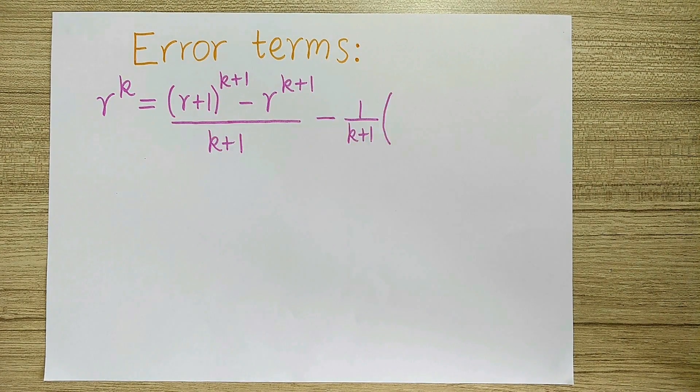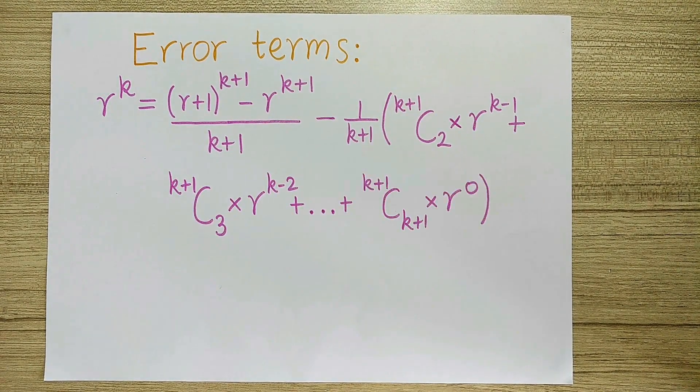Previously, we expanded r plus 1 to the k plus 1 using the binomial theorem and neglected all the terms which have a power of r less than k. So this time we wouldn't neglect them and let's write them out.